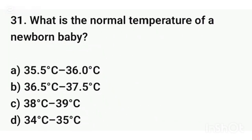Question number thirty-one. What is the normal temperature of a newborn baby? The correct answer is option B: 36.5 to 37.5 degrees centigrade.